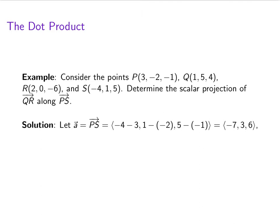All right, so first we've got to come up with these vectors. So PS is going to be the vector negative 7, 3, 6. We should double check those calculations. And let's calculate QR, we get 1, negative 5, negative 10.